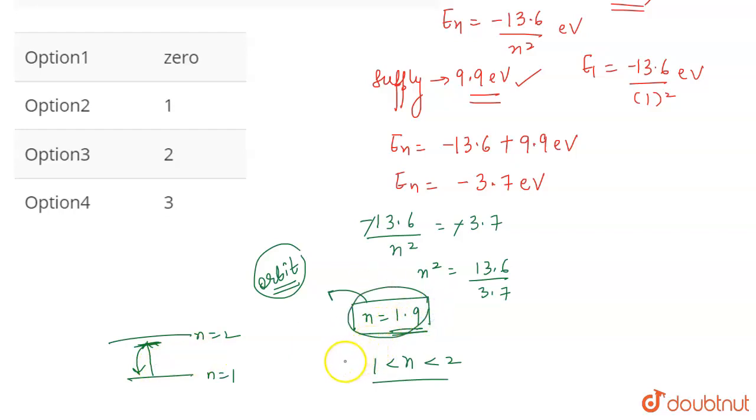So no excitation was possible because the value of n is a decimal value, which is not possible. The value can be either one or it can be either two. If it is lying in between, it means that excitation has not taken properly.